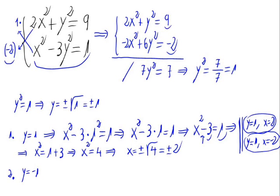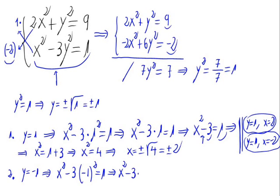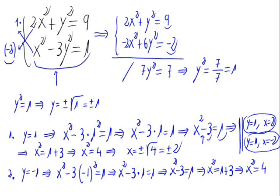Now for the second solution, y equals minus 1, let's substitute minus 1 into the second equation. We get x-squared minus 3 times (minus 1)-squared equals 1, so x-squared minus 3 times 1 equals 1, which gives x-squared minus 3 equals 1. Therefore x-squared equals 4, and x equals plus or minus the square root of 4, which is plus or minus 2.